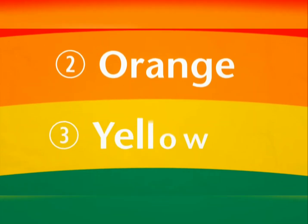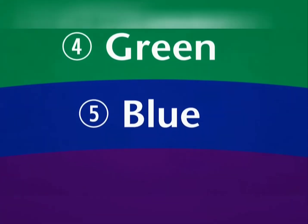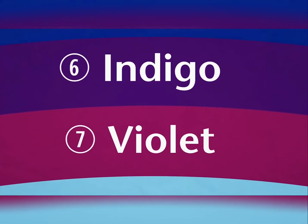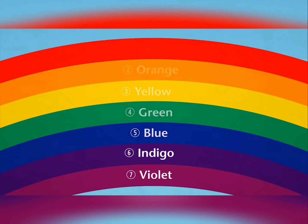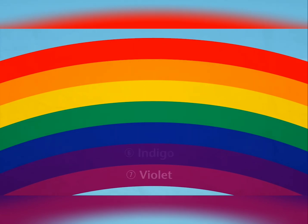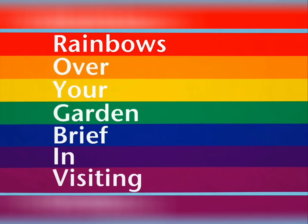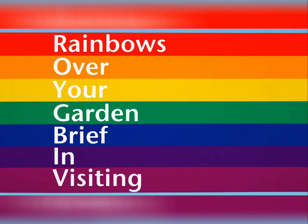As you can see, it's a beautiful colored arch made up of seven different colors. These colors are red, orange, yellow, green, blue, indigo, and violet. They always appear in the same order in the rainbow. Sometimes it's hard to see indigo and violet as separate colors because they merge into purple. Can you think of a way of remembering the order of the colors? The first letter from each color gives you R, O, Y, G, B, I, V. We came up with 'Rainbows over your garden, brief in visiting' to help you remember. Why not try creating your own?